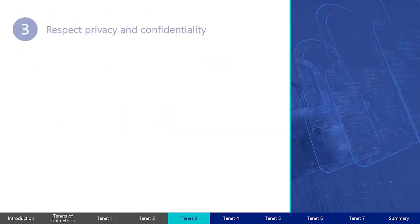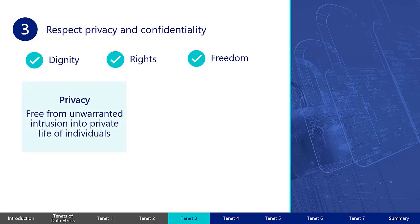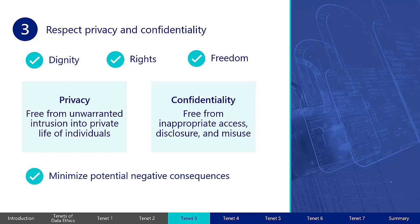The third tenet of data ethics is to respect privacy and confidentiality. Privacy and confidentiality should always be protected in a manner that respects the dignity, rights, and freedom of data subjects. Privacy is the state of being free from unwarranted intrusion into the private life of individuals, and confidentiality is the state of one's information being free from inappropriate access, disclosure, and misuse. An essential objective of privacy and confidentiality protection is to minimize potential negative consequences through measures such as comprehensive risk assessments, disclosure avoidance, and upholding data governance standards, policies, and procedures.